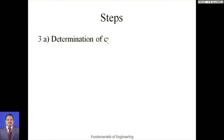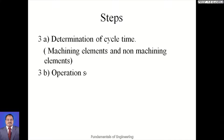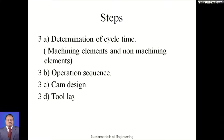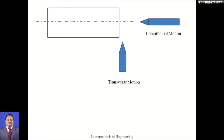Then we determine the cycle time, calculated based on machining and non-machining elements. We decide the operation sequence, and based on this sequence we design the cam profile and tool layout for the slide and turret. To prepare the tool layout and cam profile, we must bifurcate operations performed by slide tools versus turret tools. For this, understand two motions: transverse motion and longitudinal motion.